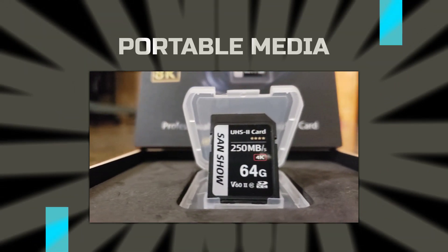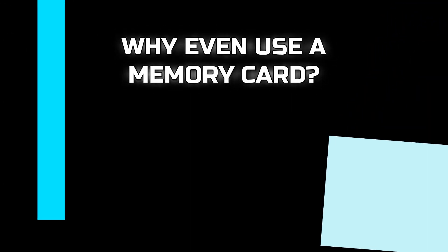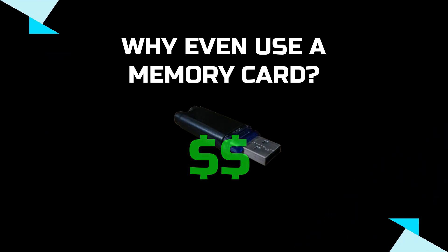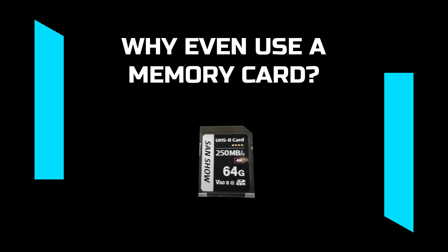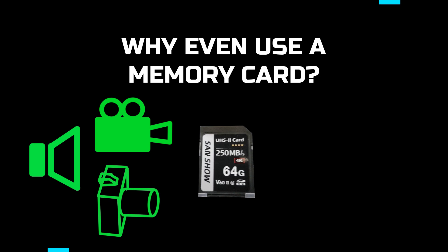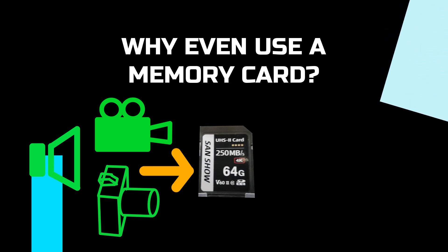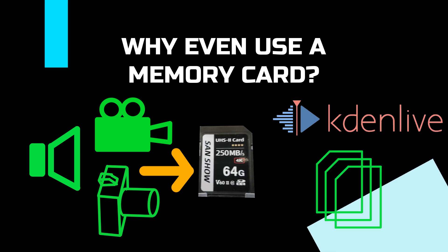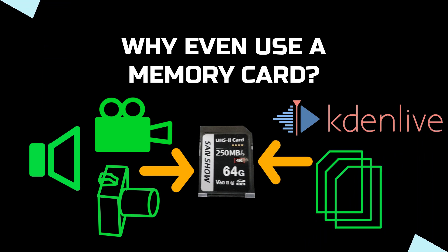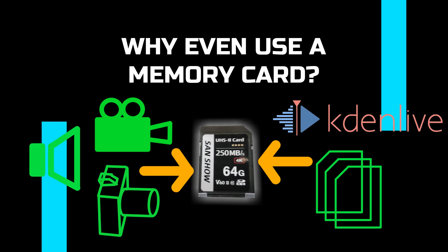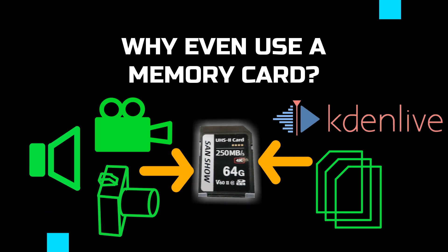It transfers up to 250 megabytes per second. A distinct advantage to using a memory card is that you can collect all of your pictures and video and all the media you're going to use directly from your preferred camera, and store the portable loaders from KadenLive, as well as any project files and final renderings, right on the same memory card. It's a huge shortcut for workflow and for transferring and working on things, and it just speeds up the whole process.